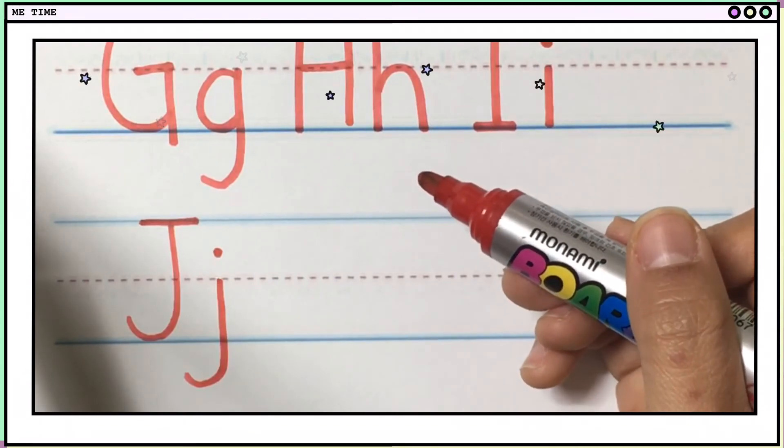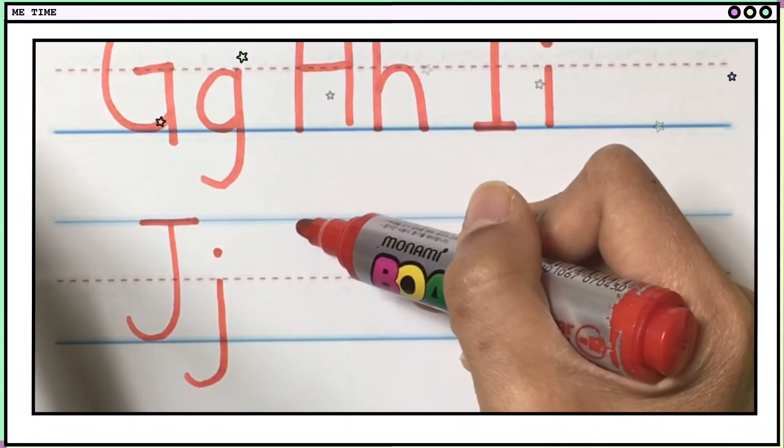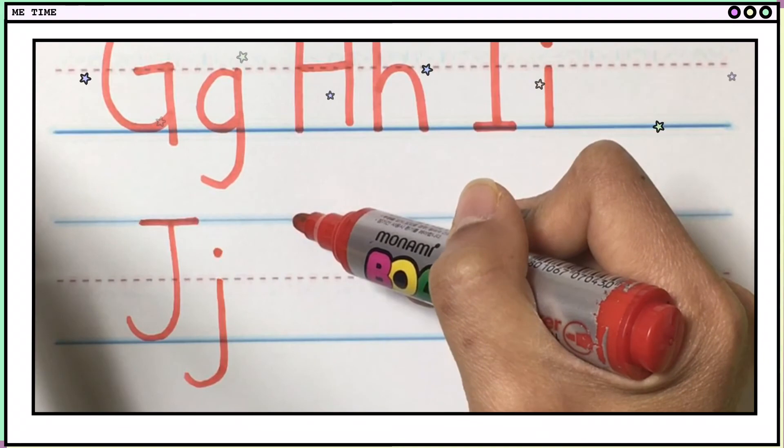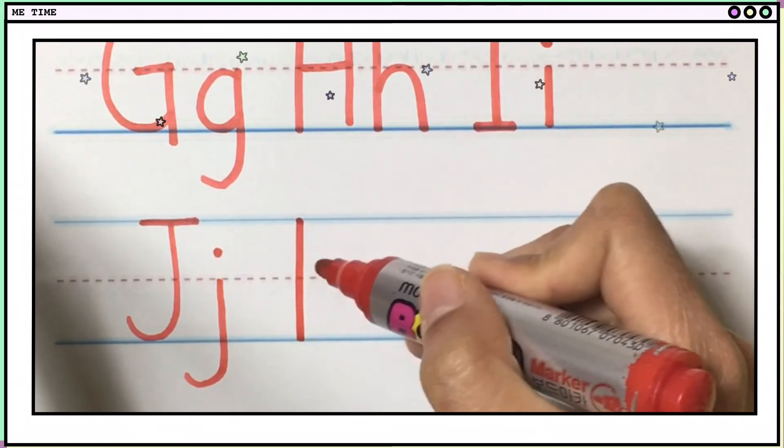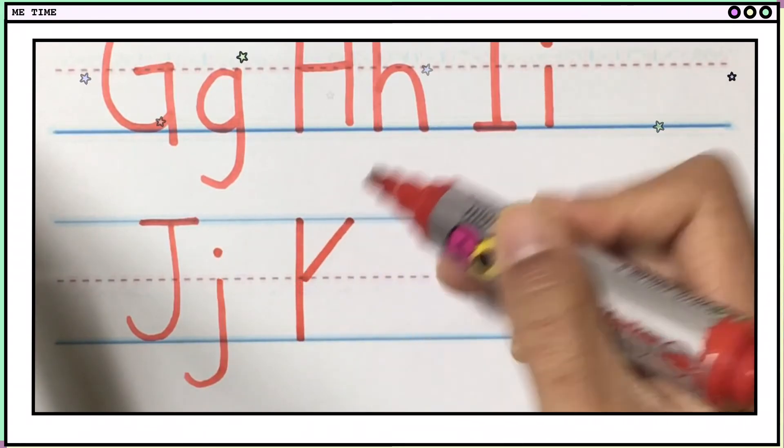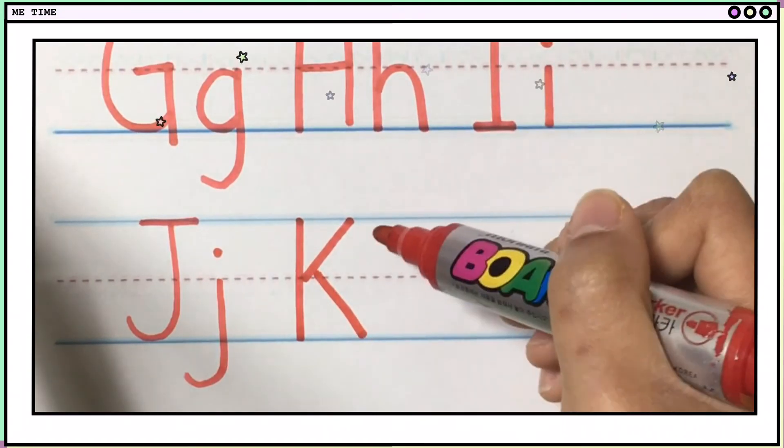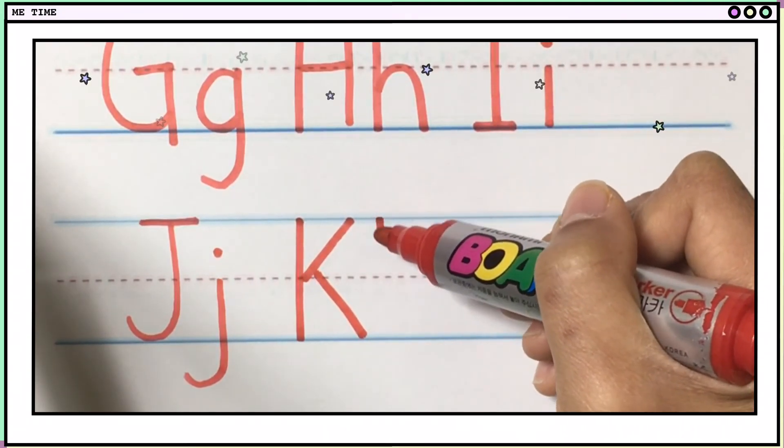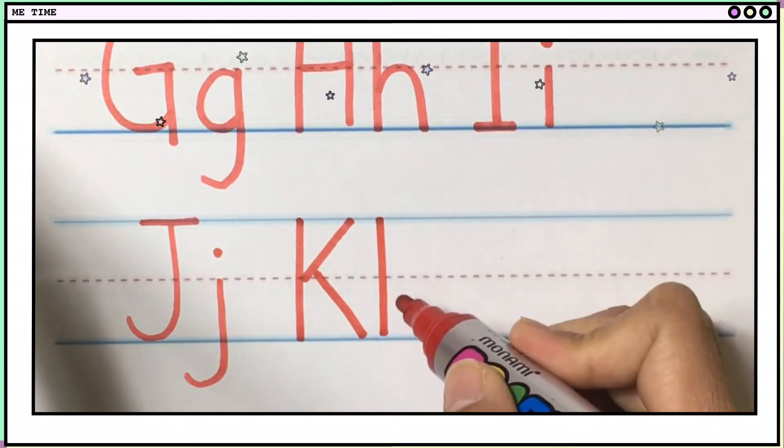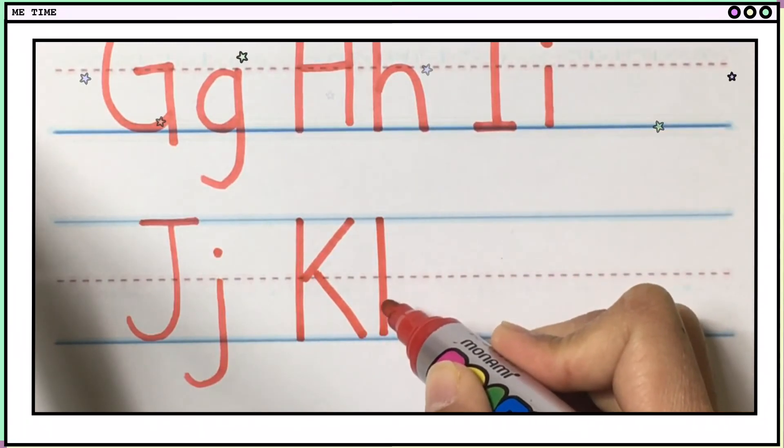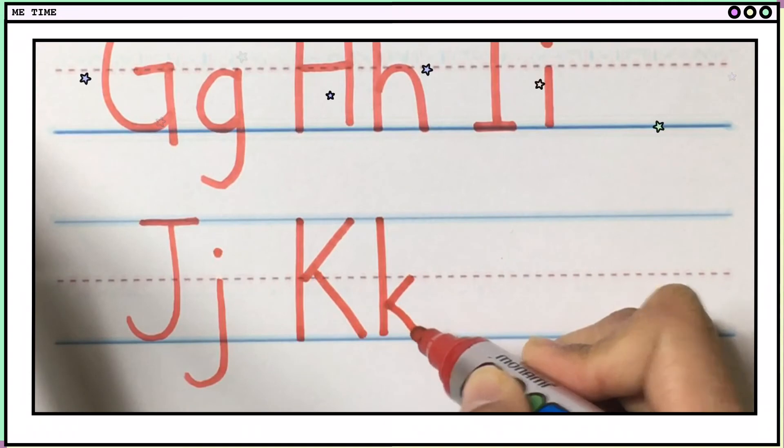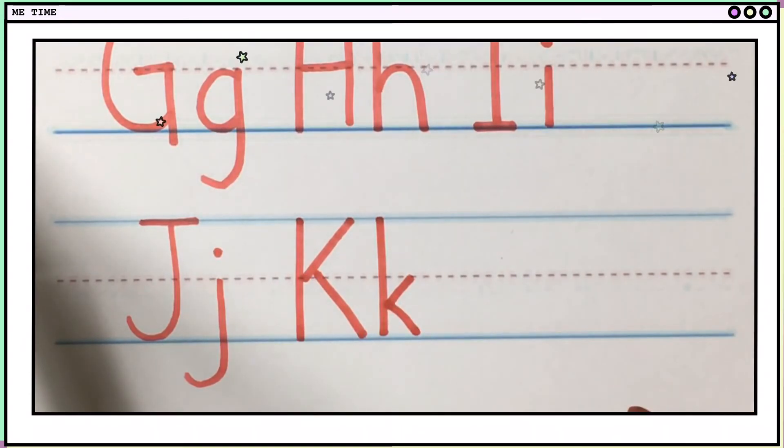Next is what letter? Yes, K. First, make one line here, another line here, and here. Big K, and small K, also same, one straight line, but you start making the cross line. One, two. Okay, very good. That is big K, small K.